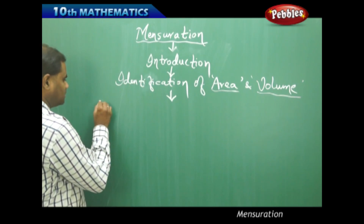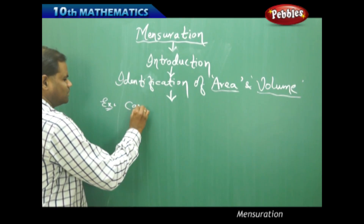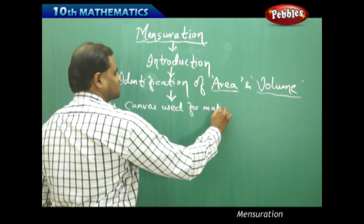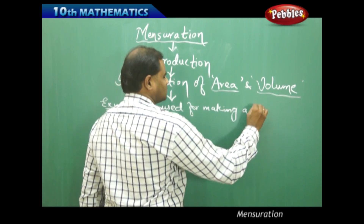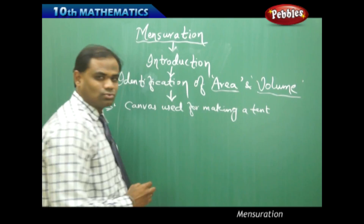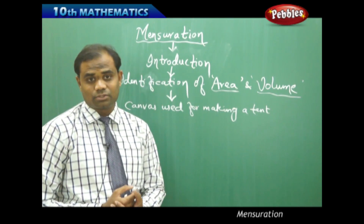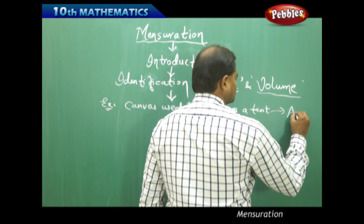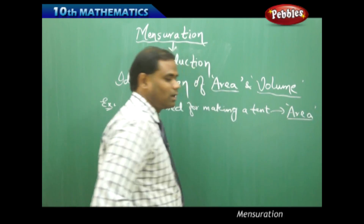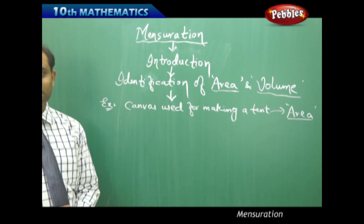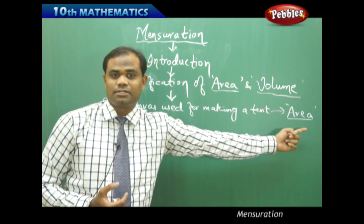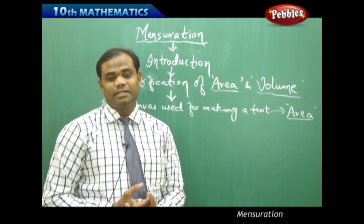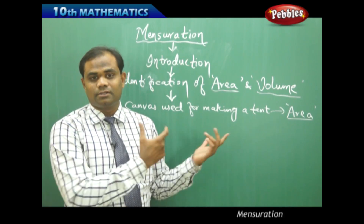Let me start with the canvas used for making a tent. If my problem is related to the amount of canvas I require to make a tent, then immediately what comes to mind is finding the area — this is how I understand the situational problem. The canvas used for making a tent is related to area, therefore this problem is exclusively about identifying the area.